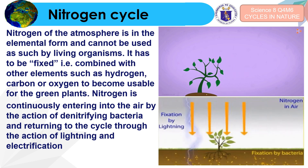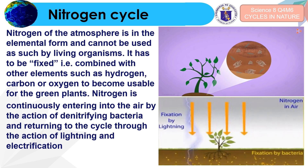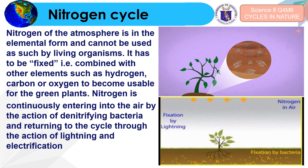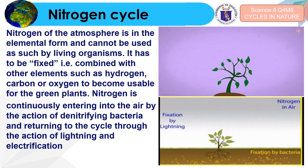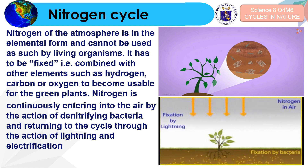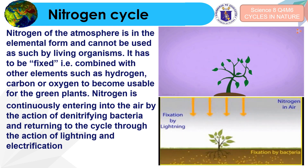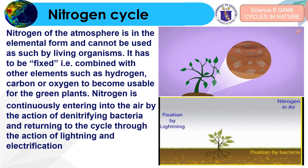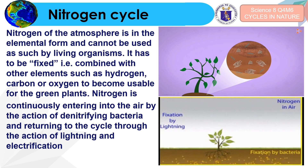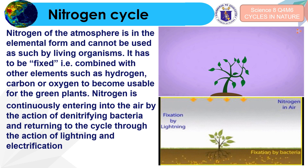Let us proceed to the nitrogen cycle. Unlike other cycles, atmospheric nitrogen is in elemental form and cannot be used directly by living organisms — it must be fixed, meaning combined with elements such as hydrogen, carbon, or oxygen, to become usable for green plants. Nitrogen continuously enters the air through the action of denitrifying bacteria and returns to the cycle through lightning and electrification.